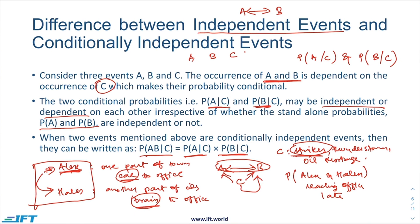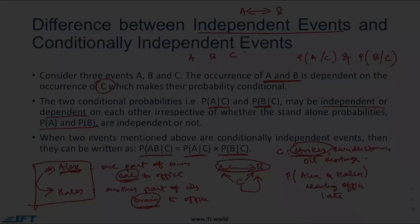So if there is a case of strike, thunderstorm, or oil shortage, their probability of reaching the office late will now be dependent on each other. Their probabilities will now move together, and it will not be independent anymore. This is the concept of conditionally independent events.